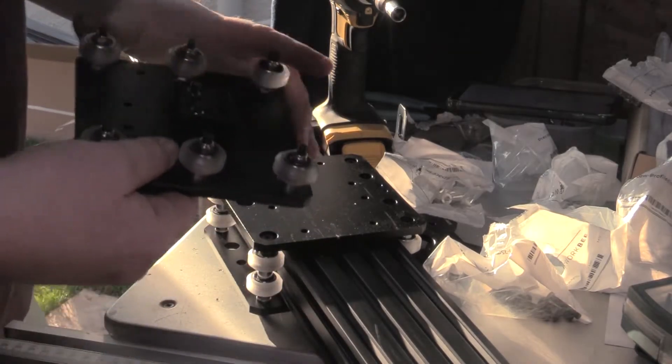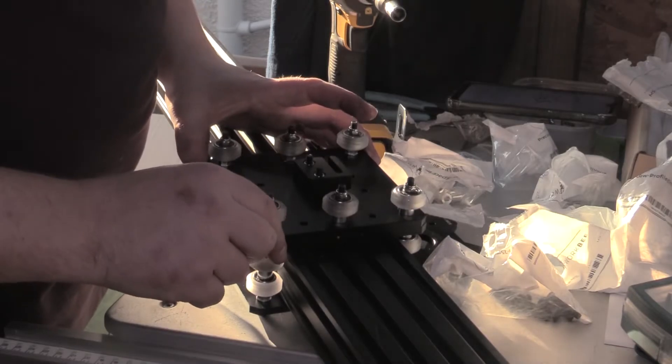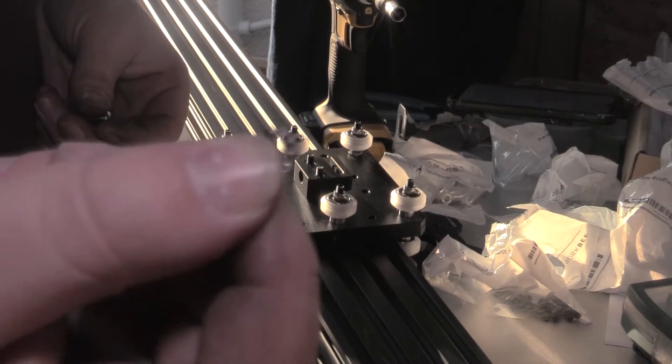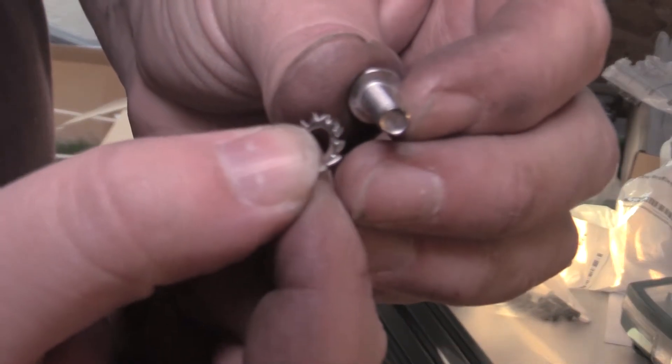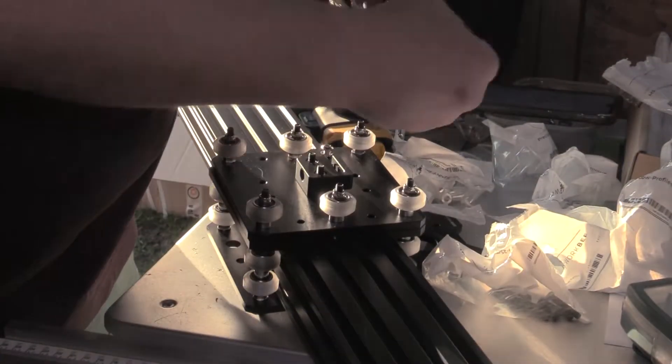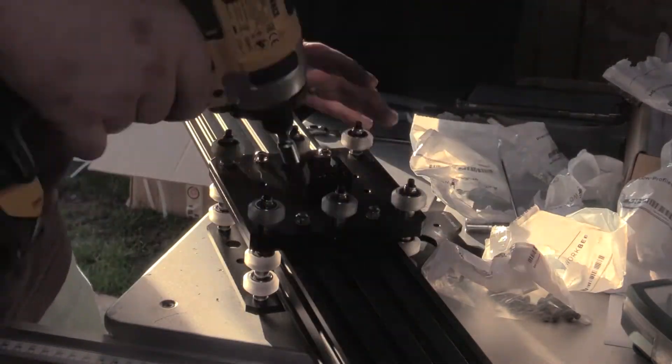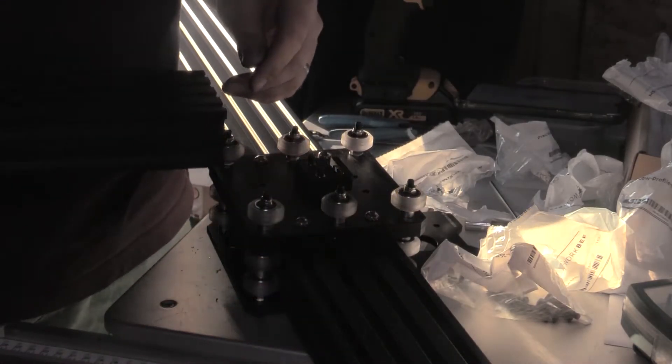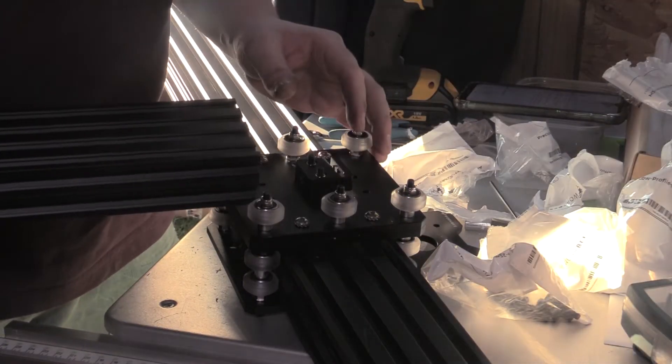The next thing to do now is to fix this. This is fixed on just with an M5 cap head screw and a serrated locking washer. So now we have the Z extrusion. We're going to slide this on.